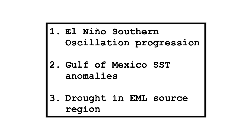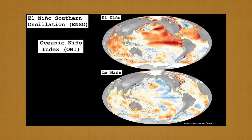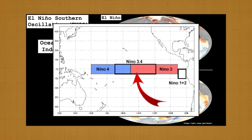As you may remember, we looked at three main variables that modulate tornado frequency and distribution in the US each spring: the progression of the El Niño Southern Oscillation, Gulf of Mexico sea surface temperature anomalies, and drought in the elevated mixed-layer source region. I'll put a link to my 2024 tornado season forecast video in the description box below so you can refer back to it for more detailed information on these factors.